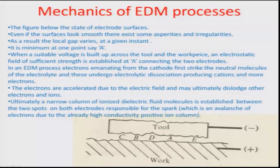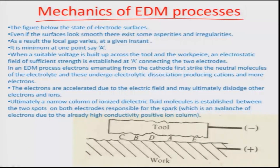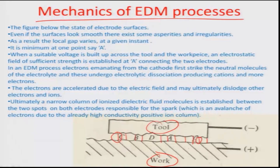Let us look at the basic mechanics of the EDM process. The tool and workpiece surfaces are highly rough with varying inter-electrode gaps — there can be peak-to-peak or valley-to-valley distances. The field at different places within the tool surface also varies. We are actually looking for the least distance — maybe a peak-to-peak facing configuration — where the field would be highest, giving the most likely location for the spark. We will continue this discussion in the next module.